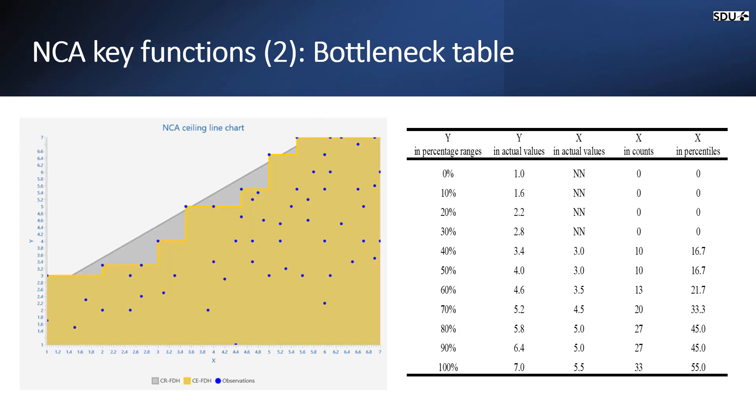Here is the second key NCA function, the bottleneck table. This is the ceiling line chart and this is basically a tabular visualization of the ceiling line function.